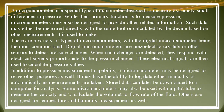Some micromanometers may be used with a Pitot tube to measure velocity and calculate the volumetric flow rate of a fluid. Others are designed for temperature and humidity measurement as well. The micromanometer can measure extremely small pressure differences and can also act as a transducer, converting pressure into other units. It can be used to measure velocity, flow, and many other things, making it a very important tool in this field.